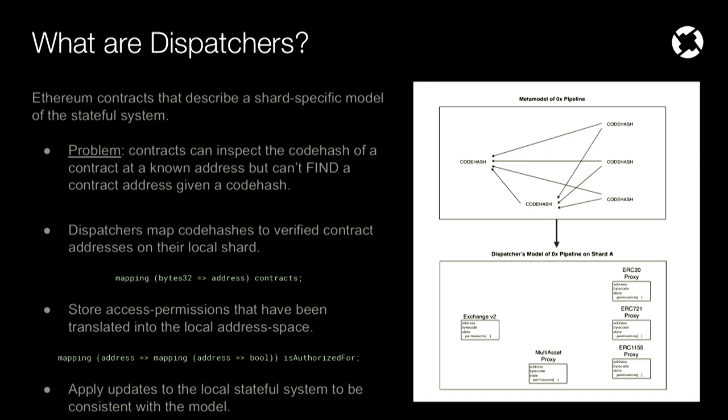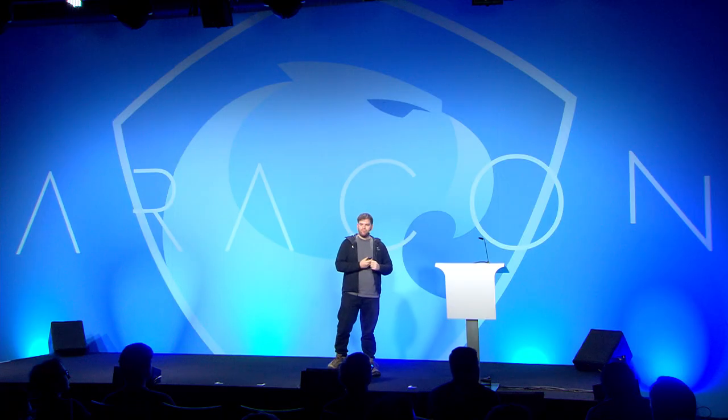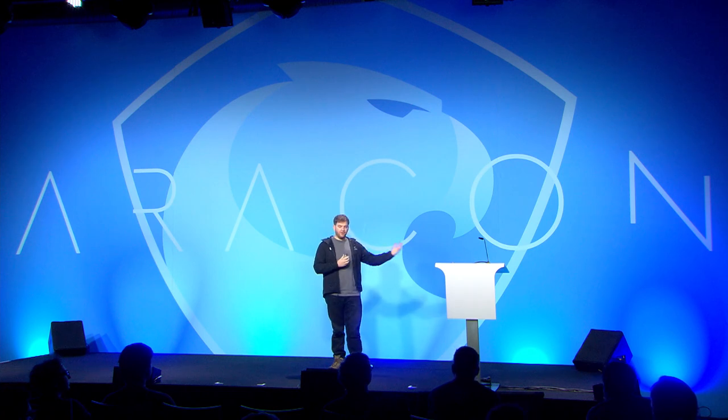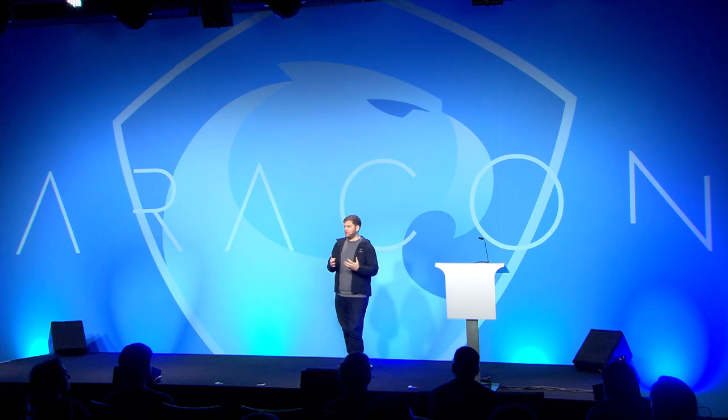What are dispatchers and how do they work? Dispatchers are also just Ethereum smart contracts. What they do is translate these code hashes from code hash space back into the local address space of the shard or blockchain they are located on. One problem here: it's easy for smart contracts to inspect the code hash of a known address. But if we give a smart contract a code hash, it doesn't know where to find the contract associated with it. So we have to tell the dispatcher — this is Exchange version 3, and this is the bytecode associated with it. It will verify that's true and add it into its own local model.